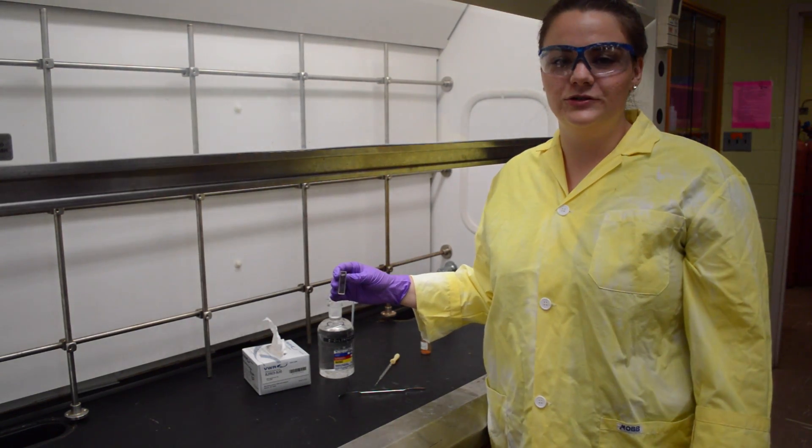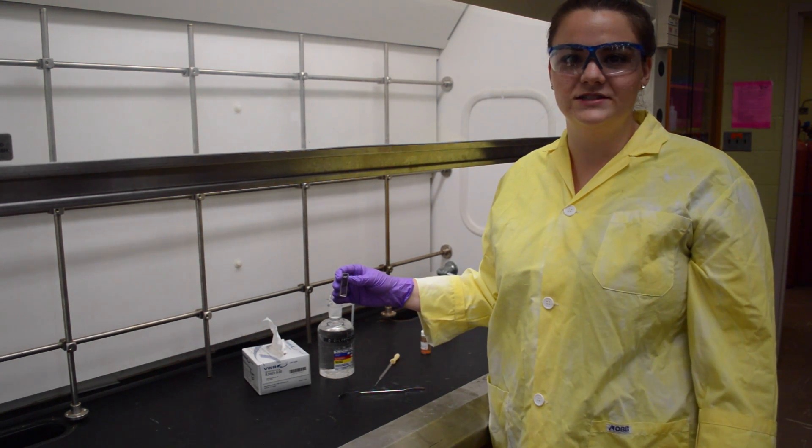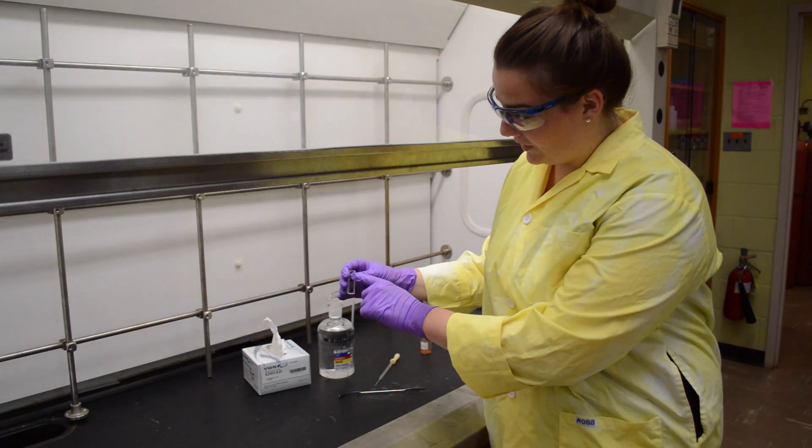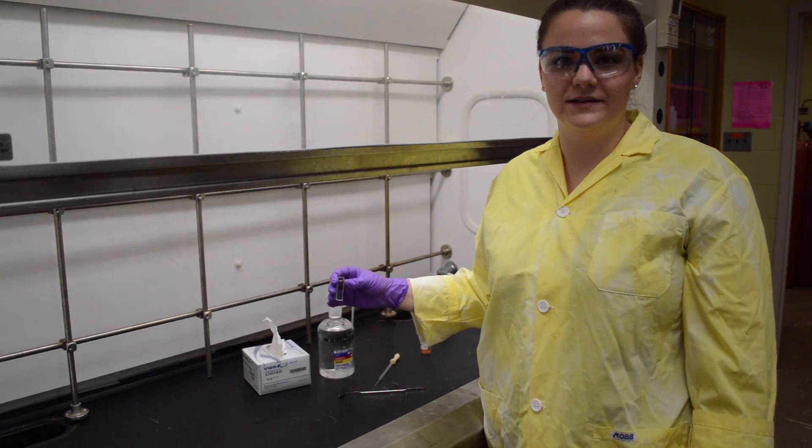If your sample is too concentrated, you want to pour about half the amount into the proper waste bin and add solvent back up into the top of the cuvette so the UV-vis spectrometer will read in the proper range.